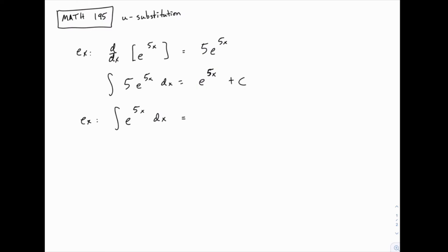If we use the previous example as a pattern, when we integrated 5e to the 5x, we had e to the 5x in our answer. It seems like we're still going to have e to the 5x in our answer. Nothing's really changed other than we're missing this multiple of 5, which means we should also divide the answer by that.